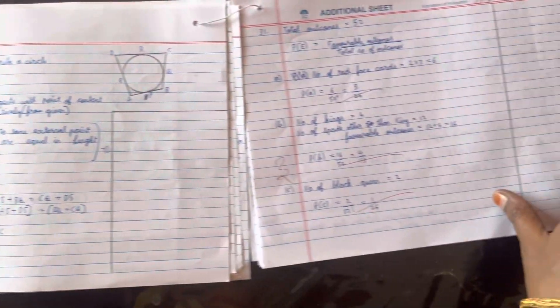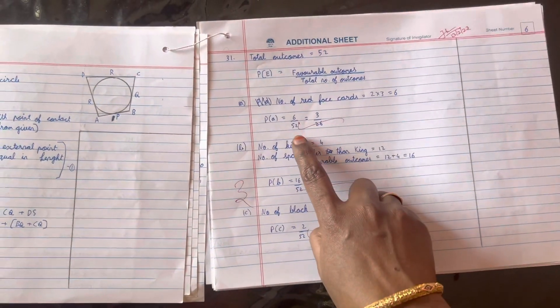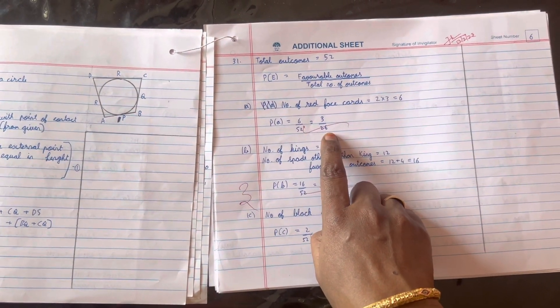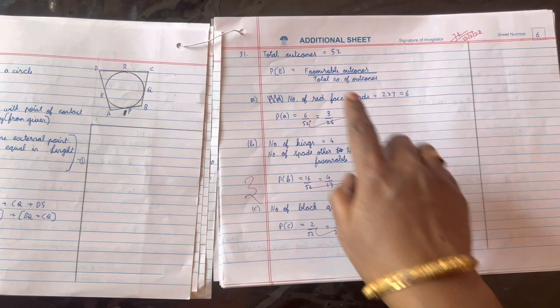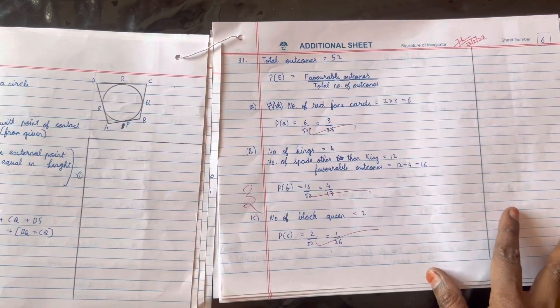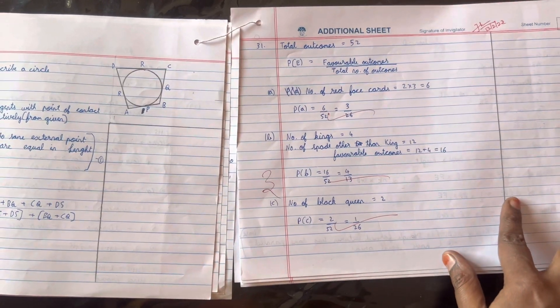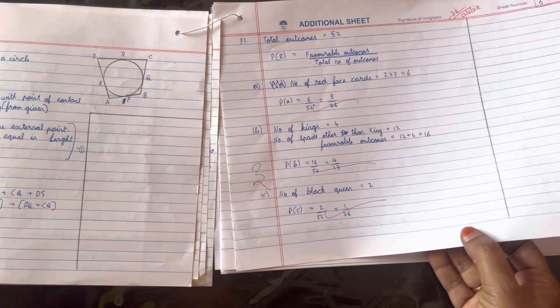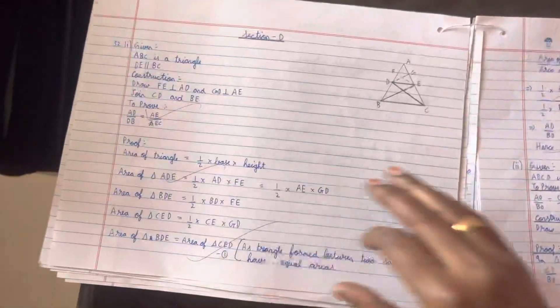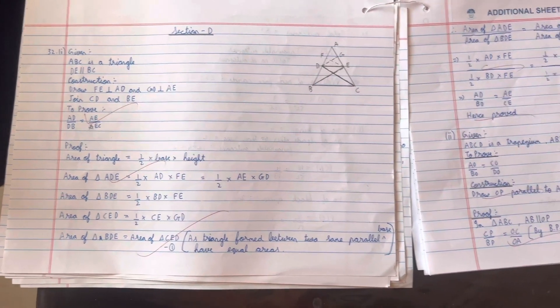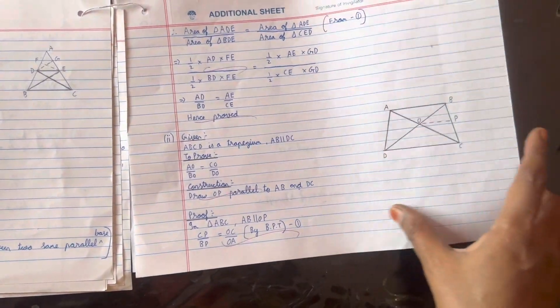See, this is the three marker. In probability, you have to write the full answer then reduce it. You have to write the sample space, the total number of outcomes, the formula, because there's not much to write. Write all this and make the examiner clear that you know all the concepts of probability. This is the theorem, the BPT, followed by the question.